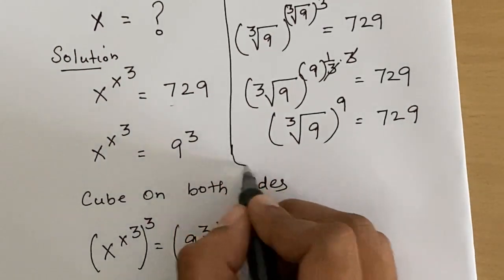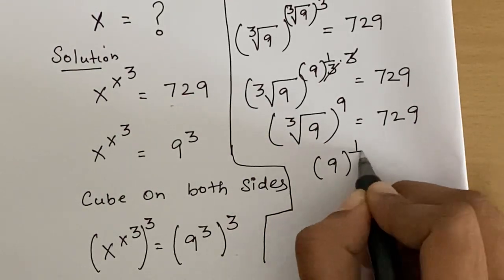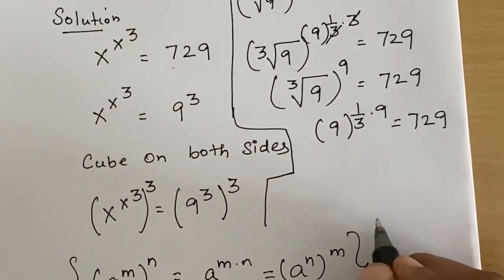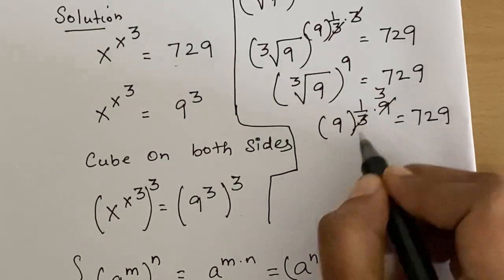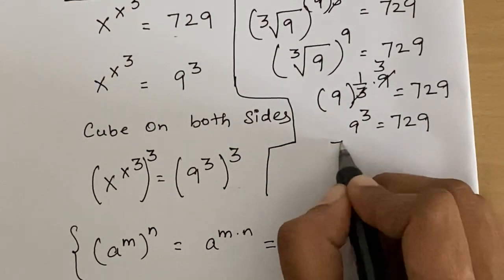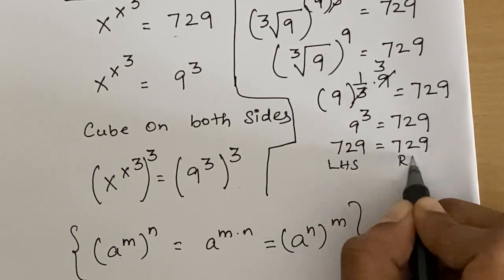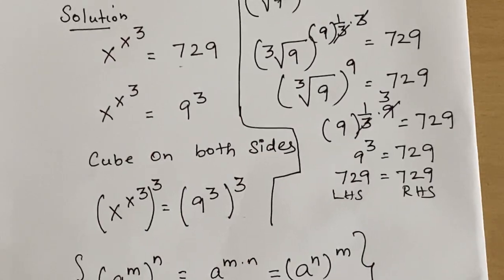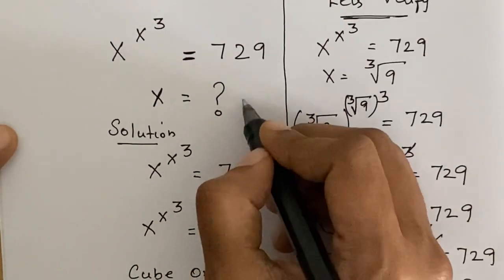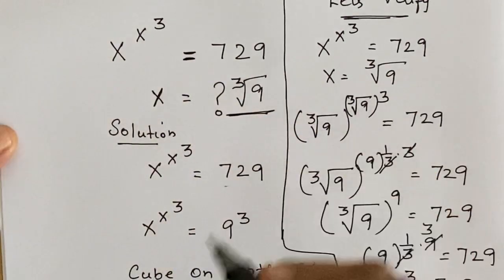This can be written as 9 to the power (1/3 times 9) which equals 729. Simplifying, we get 9 cubed equals 729, and since 729 equals 729, left hand side equals right hand side. Hence we verify that the value of x is correct — x equals cube root of 9. If you like this video please subscribe, and thanks for watching.